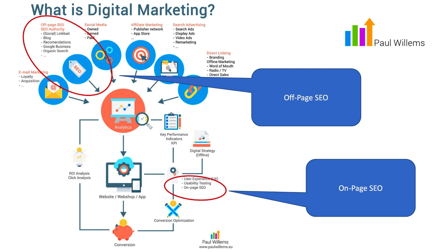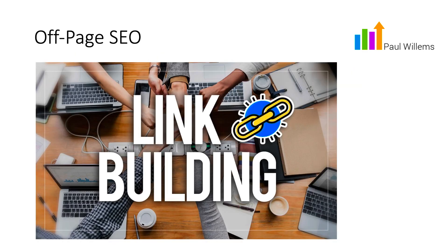Search engine optimization consists of two parts: off-page SEO and on-page SEO. Off-page SEO involves things you can work on without changing your website directly. Link building is one example — if you have a good blog with great content and people create a hyperlink on their website pointing to yours, that's a plus for your website. If many websites link to you, Google indexes this and recognizes your page as important.